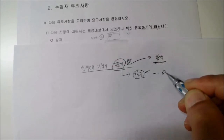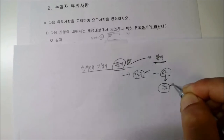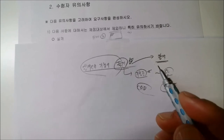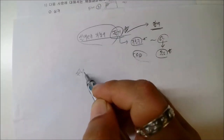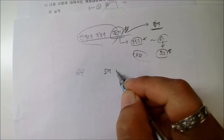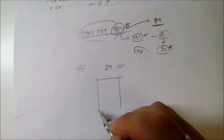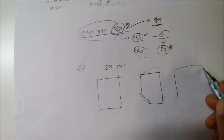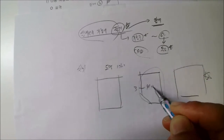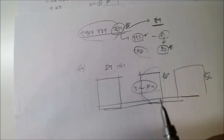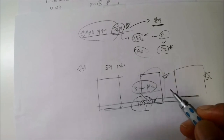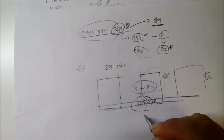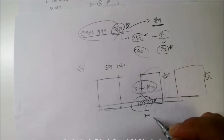실기는 기본형 도면 1개, 꺾인 형태 1개, 큰 형태 1개 등 3~4가지 도면을 그려보면 100% 합격 가능합니다. 오늘은 공개 문제의 기본 내용을 설명드렸고, 다음 시간에는 이 예시 도면을 가지고 평면도를 직접 그려보겠습니다. 감사합니다.